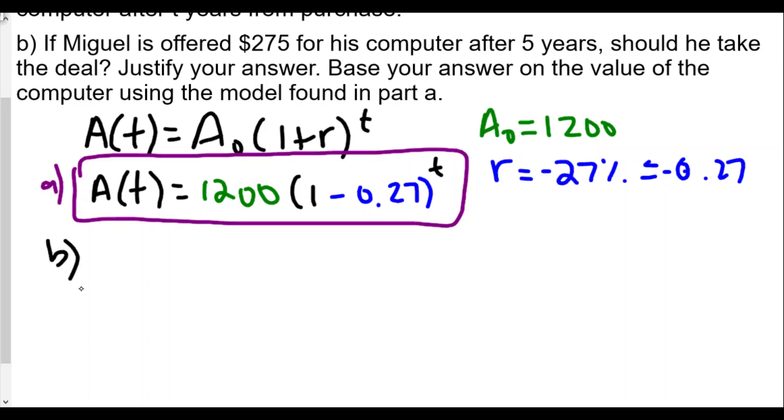For part b, using Miguel's formula to figure out the value of the computer, A(5) equals 1200 times (1 minus 0.27) raised to the fifth power. This will be the value of what Miguel predicts the computer should be.